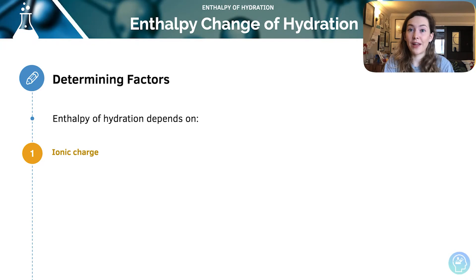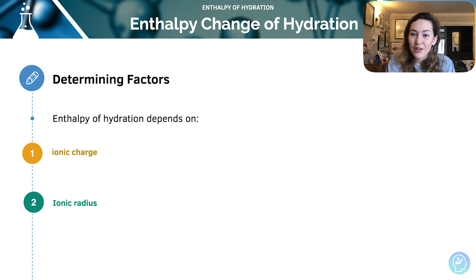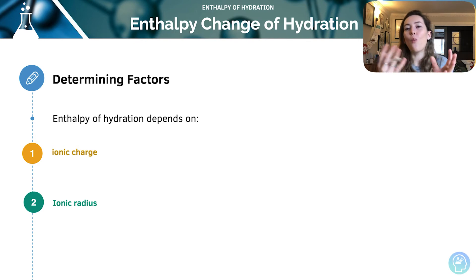So when we write plus aqueous, that's taken to mean a large excess of water. What does enthalpy change of hydration depend on? Well, one of those things is ionic charge. The greater the ionic charge, the stronger the ion-dipole interactions that form between the ions in the ionic lattice and the water molecules. And ionic radius — the lower the charge density, which usually means the greater the radius, the weaker the ion-dipole interactions between the ions of the lattice and the water molecules.